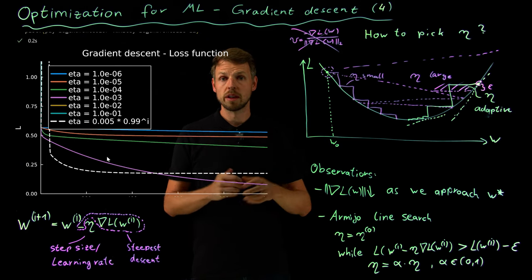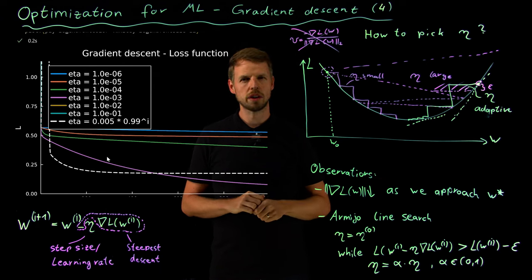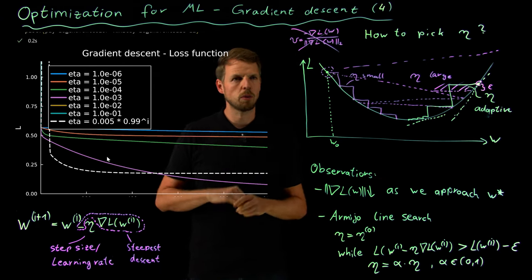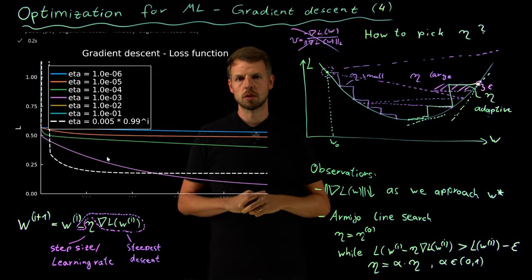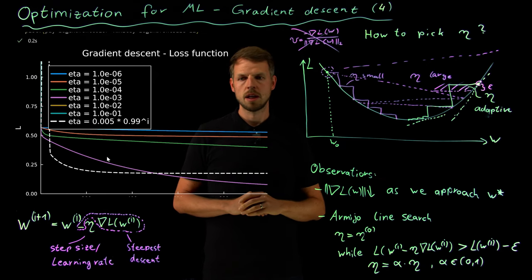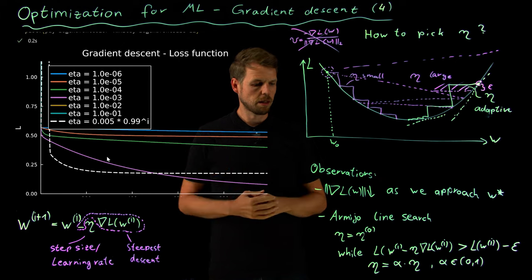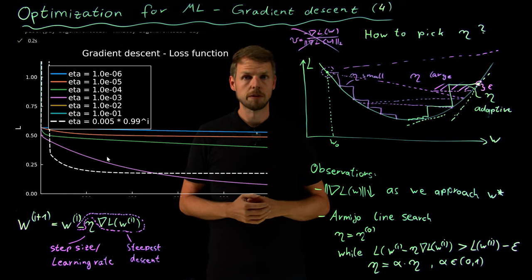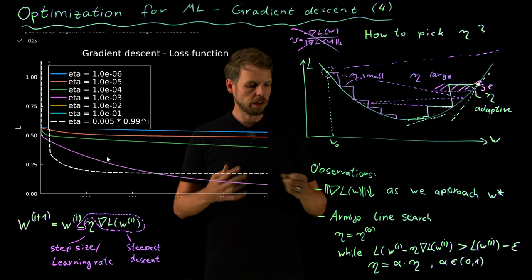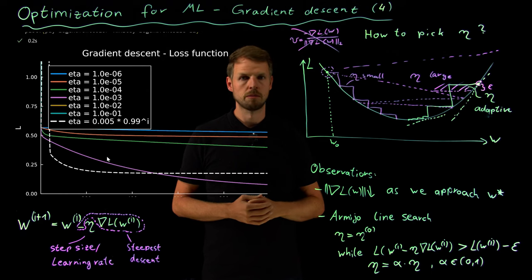The reason I used this schedule instead of the Armijo rule is that in machine learning you will usually see schedules like this, and we will talk about this in more detail in upcoming videos. For now I hope you have a good feeling that selecting the step size is challenging and really important for having an efficient algorithm. Thank you.